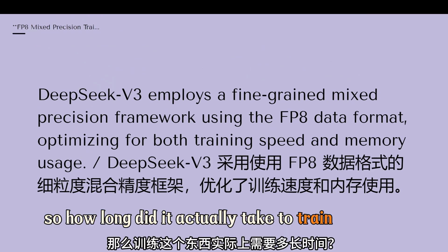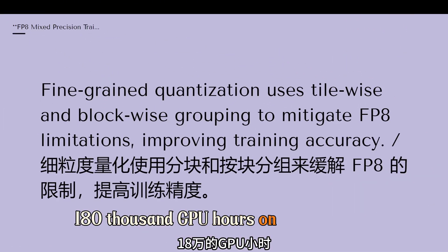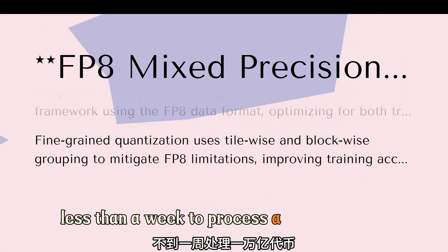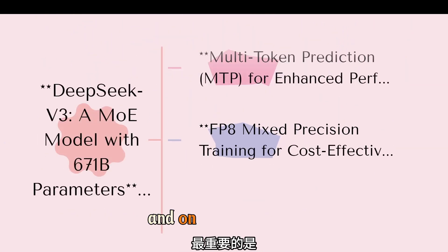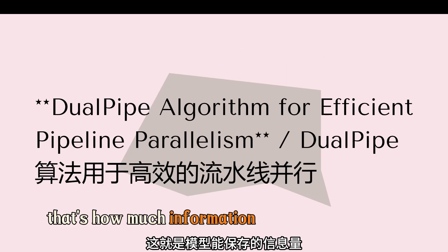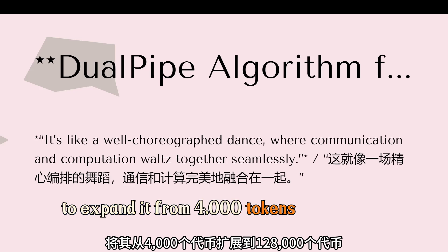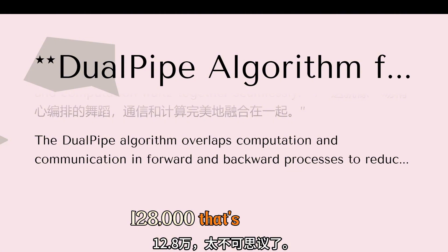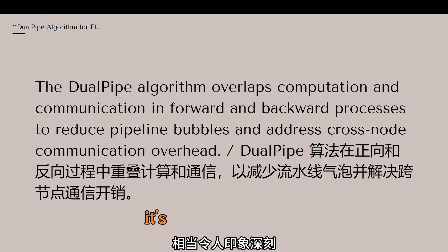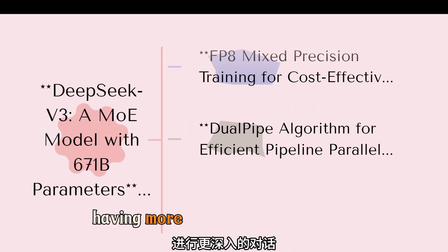Training on a trillion tokens takes roughly 180,000 GPU hours on their cluster — about 3.7 days. Less than a week to process a trillion tokens. On top of all that, they extended the context window to handle even longer sequences, using a technique called YARN to expand it from 4,000 tokens to 128,000 tokens. That's like giving the model a whole book to read and expecting it to remember every detail — really important for understanding long documents or having more in-depth conversations.